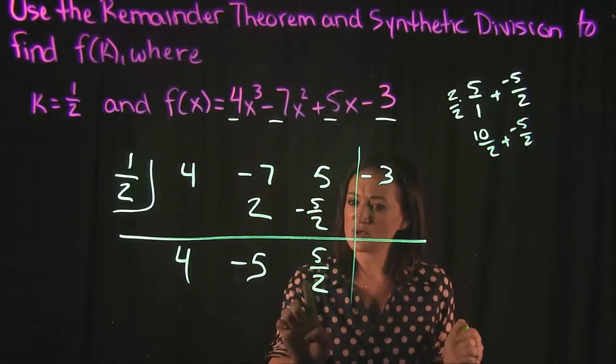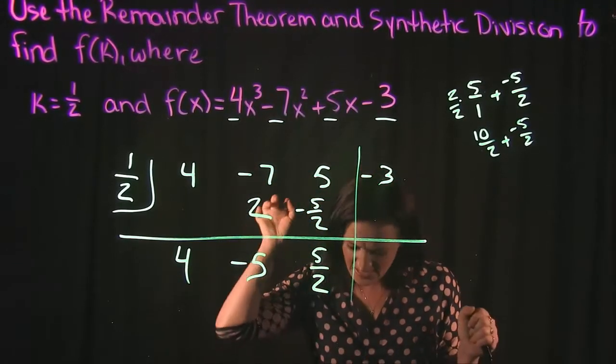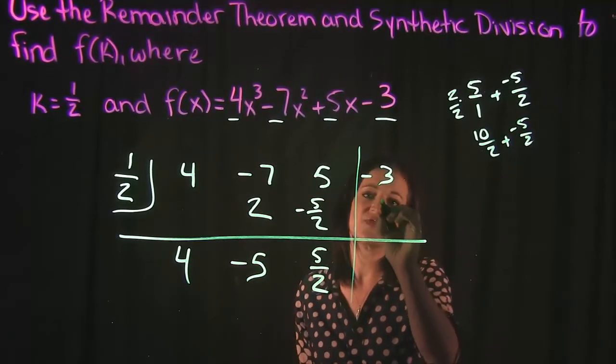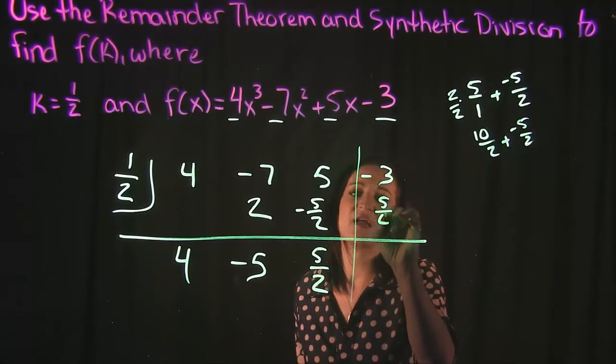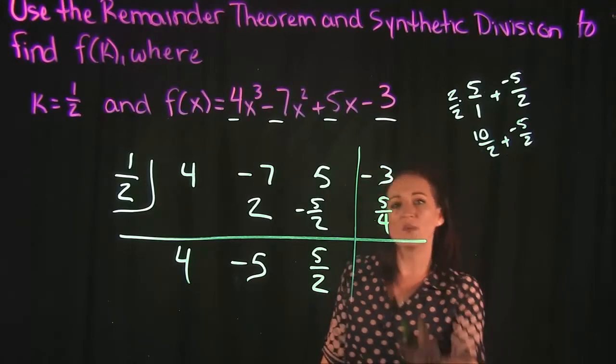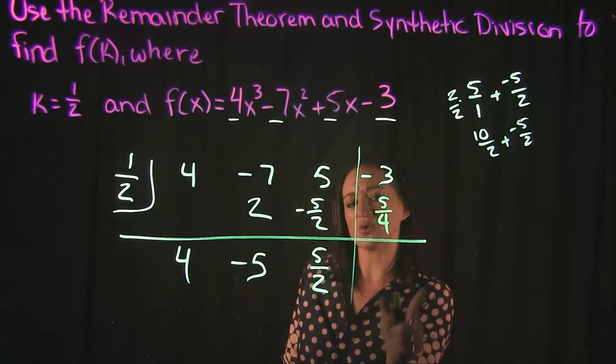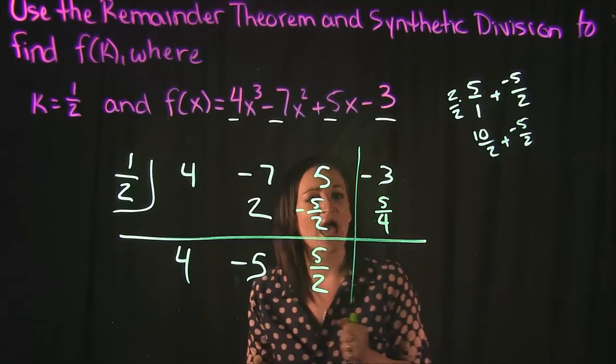When we do 5 halves times 1 half that turns into a 5 fourth. So what we get when we add this together is going to be the value of our function at 1 half.